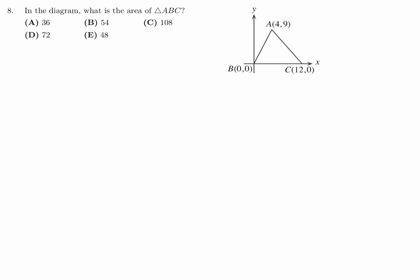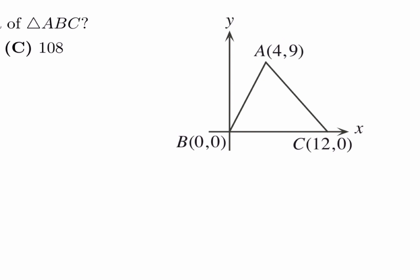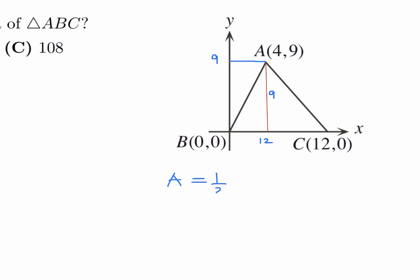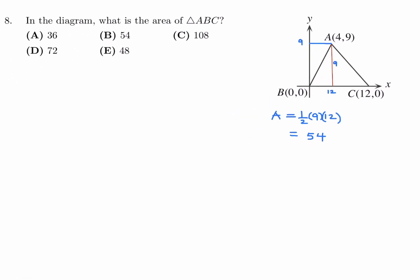In the diagram, what is the area of triangle ABC? This is going to be dependent entirely on the coordinates. The height from top to bottom is the Y coordinate of A, and that would be 9. So 9 is the height of this triangle. And the base is the X coordinate of C, which is 12. Therefore, the area is one half base times height: one half times 12 times 9, which is 6 times 9 equals 54. So 54 is the answer to number 8, and that is choice B.